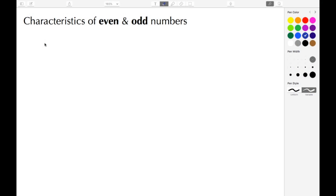Welcome back to ajspeller.com. In today's tutorial, we're going to talk about the characteristics of even and odd numbers. Let's begin with even numbers. An even number is a number that has a factor or a divisor of two.